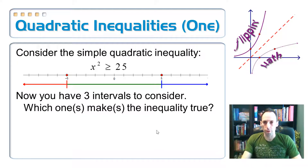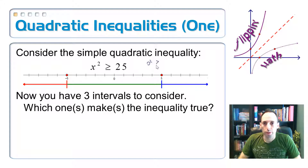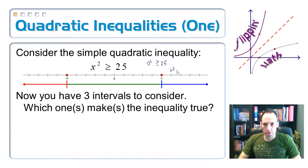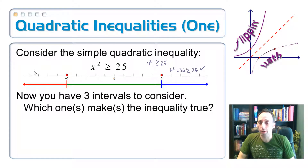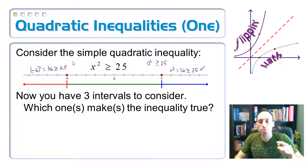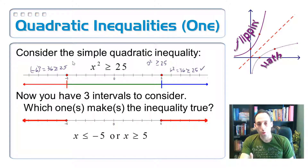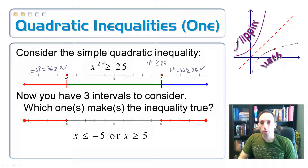Let's use test values to see which regions work. Plugging in zero: 0² ≥ 25 is not true, so zero is not in the solution. Plugging in 6: 6² = 36 ≥ 25, that checks out. Plugging in −6: (−6)² = 36 ≥ 25, that checks out too. So it's both parts on the outside. Written as an inequality: x ≤ −5 or x ≥ 5. Notice the original sign is 'greater than' — and this is an 'or' inequality.